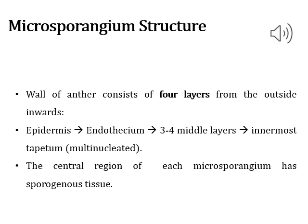Next to the middle layers, the tapetum is present. Tapetum is a nutritive tissue that helps in the development of pollen grains. This is a very important one-mark question for your PU board examination. The central-most portion of the microsporangium consists of a few bundles of cells compactly arranged together, called sporogenous tissue.